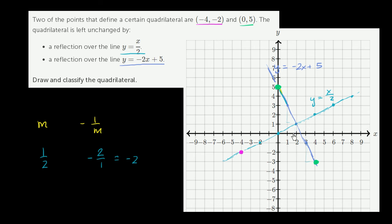So now we have three points of our quadrilateral. Let's get a fourth. The magenta point is sitting on top of y equals x over 2, so reflecting it there doesn't help. But we can reflect it across y is equal to negative 2x plus 5. These lines are perpendicular, so we drop a perpendicular and find the reflection — going right 2 and up 1 three times on each side. So the reflection is right there, and there is our fourth point.